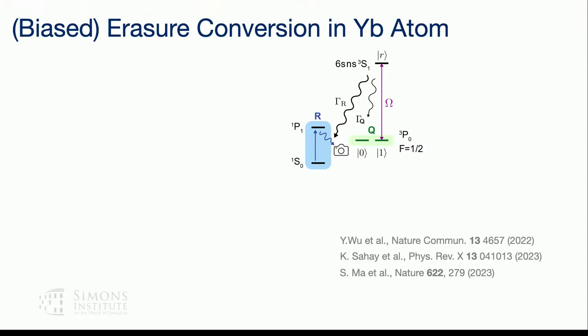The main source of decoherence is the Rydberg atom leaking to the ground state subspace. After the gate operation, we can check whether the atom ended up in the ground state subspace. If it did not, we are confident the gate happened correctly; otherwise something went wrong. We apply a laser pulse to cause a transition to another level, the atom fluoresces, and we can detect it. If the qubit were encoded in the ground state subspace, this decay would be non-detectable — a Pauli error — but now it is detectable as an erasure error.